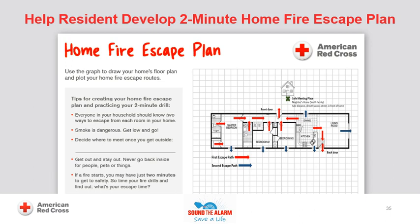Step 4: Make arrangements for infants, children, older adults, and individuals with disabilities or functional needs who may need assistance to escape during a home fire. Smoke alarms may not always wake up children. Make sure someone is assigned to assist them as part of your 2-minute home fire escape plan, and assign a backup person in case the designee is not home. Step 5: Request residents to verbally share their 2-minute home fire escape plan with you to ensure all members of household can safely evacuate in less than 2 minutes. Remind residents to share the plan with their entire household and practice a 2-minute home fire escape drill at least twice a year.